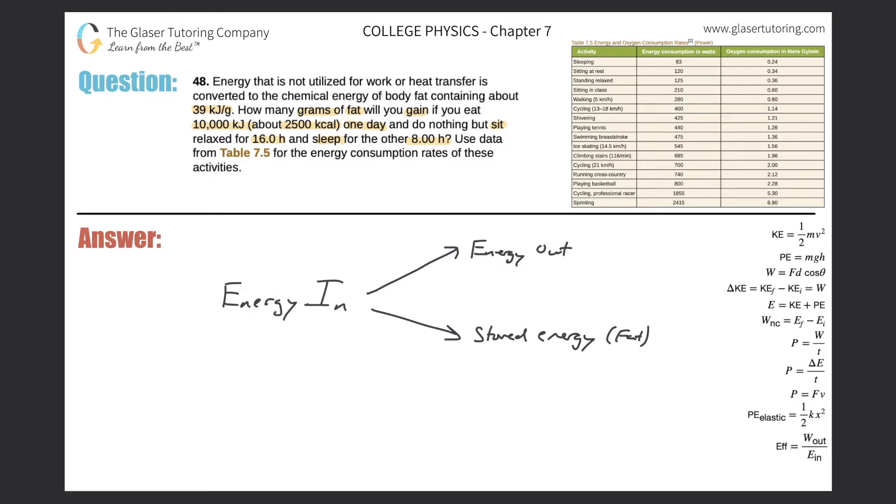So what does it say that we are consuming? Well, it says that we're eating 10,000 kilojoules of energy. Perfect. So that's easy. They gave it to us. So this is 10,000 kilojoules of energy. Which would be equivalent to, if I wanted to convert that into joules, that would be 10 million joules.